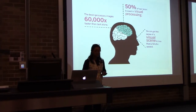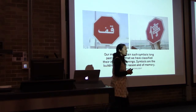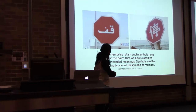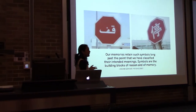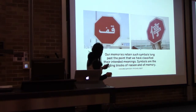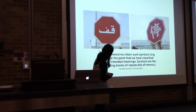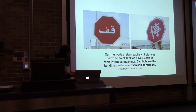Shall we test this out? Did everyone understand that? Let's go back to that slide — it's a stop sign, shown in two different languages. We didn't actually need to read the words; the combination of the colour red and the shape conveyed the message through repeated association with the word stop. Over repeated exposure, we begin to understand a symbol and it starts to have meaning and value. As Howard Gardner, the psychologist, says: 'Our memories retain such symbols long past the point that we have classified their intended meanings. Symbols are the building blocks of reason and memory.'